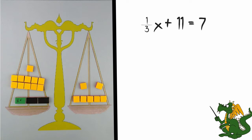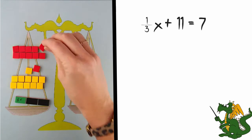To solve this problem, I am going to need to get x by itself. I need to remove 11 from each side of the equation, but there are only 7 units on the other side. So I will need to add negative 11 to both sides of the balance,